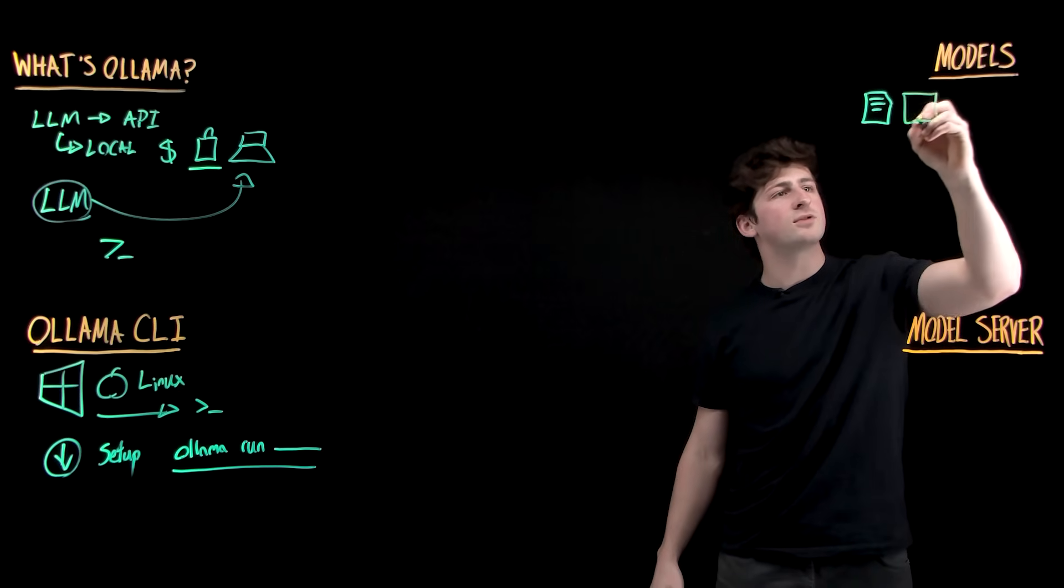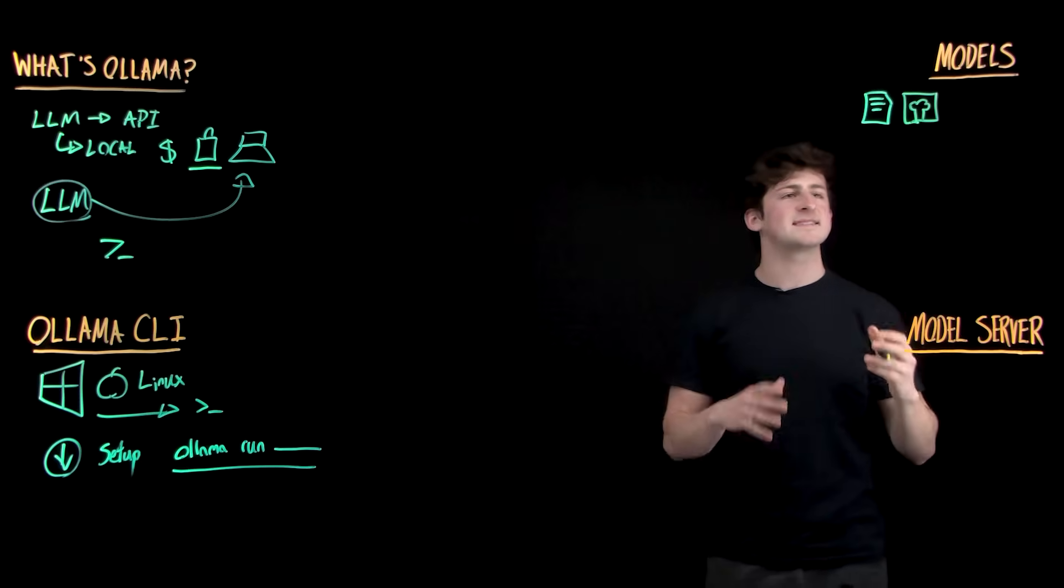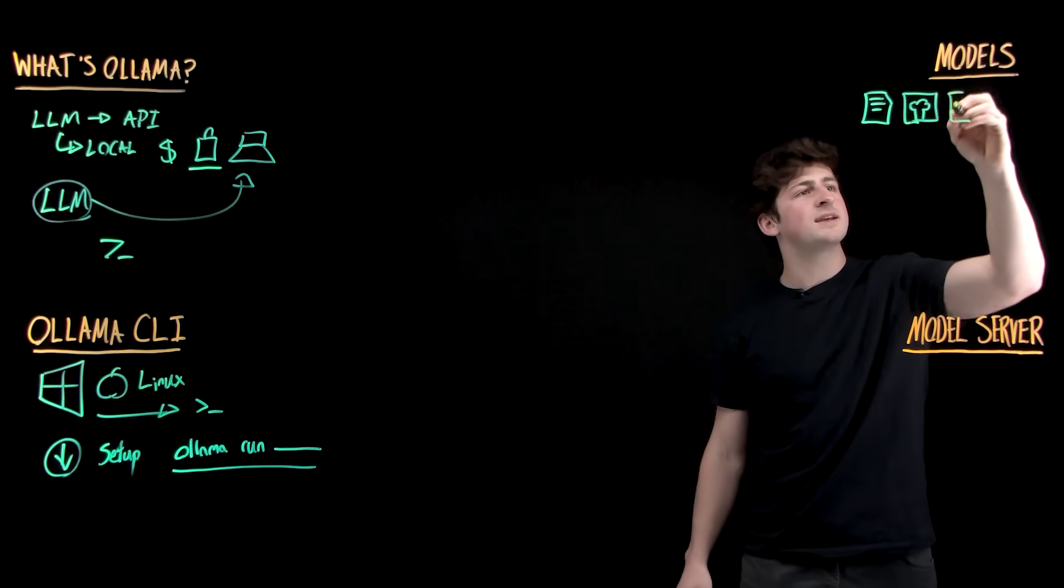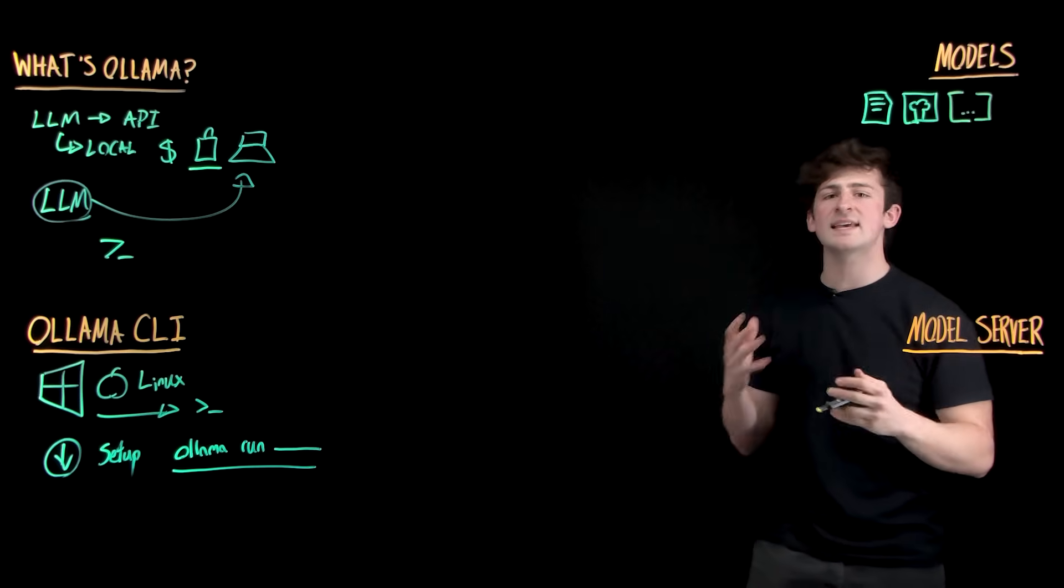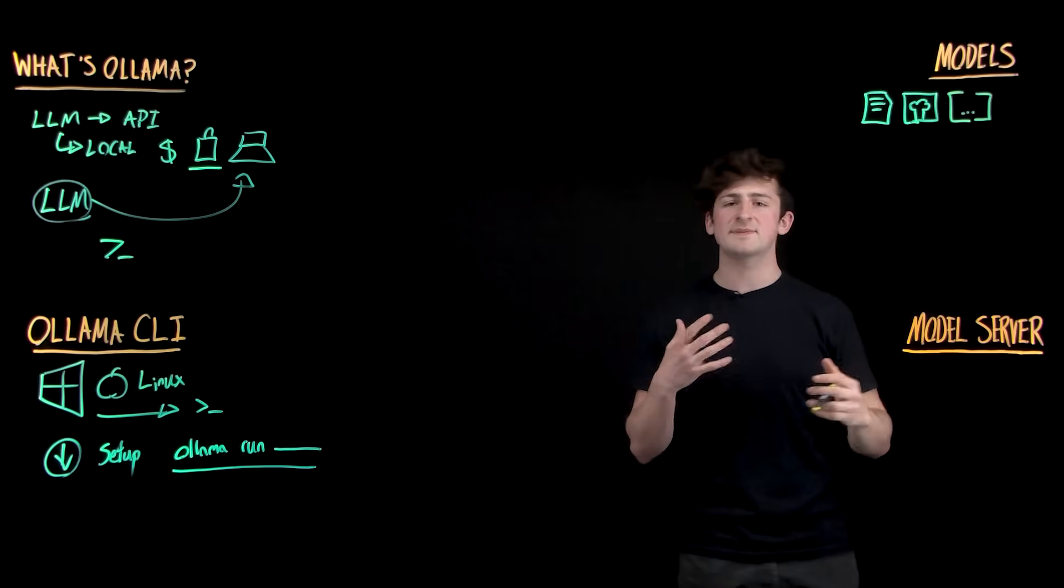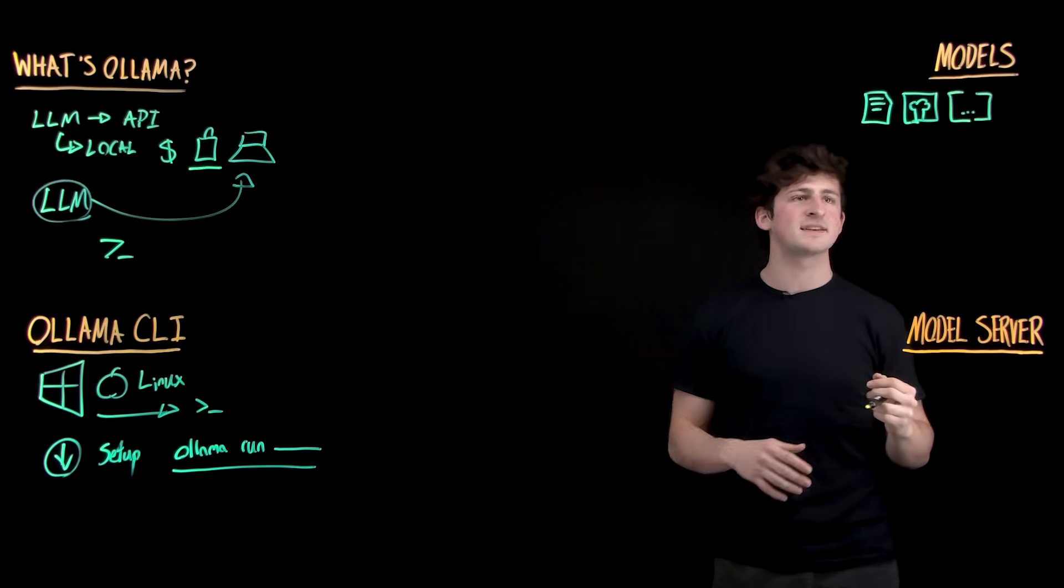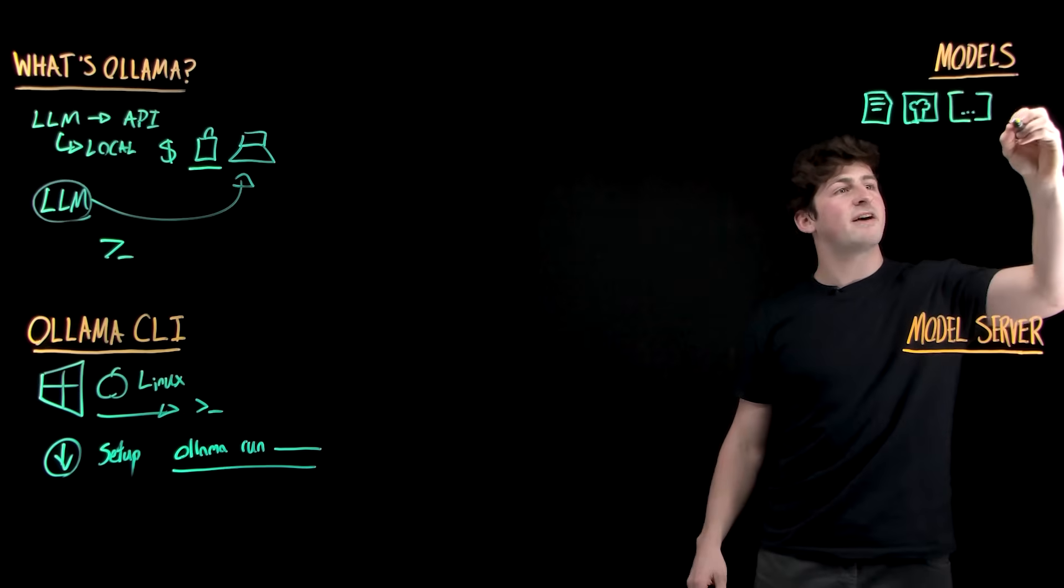The second type is multimodal models. So, for example, working with images and being able to analyze what's going on in this specific frame. The next one is a type of model called embedding, which is essentially taking our data from PDFs and other types of data formats and preparing it to be used in a vector database to do question and answering on our own unique data.